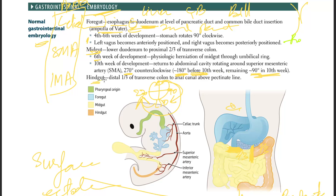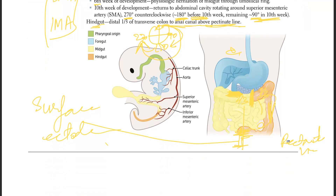The hindgut, as we already told you, is the distal one-third of the transverse colon all the way to the superior part of the rectum, above the pectinate line.